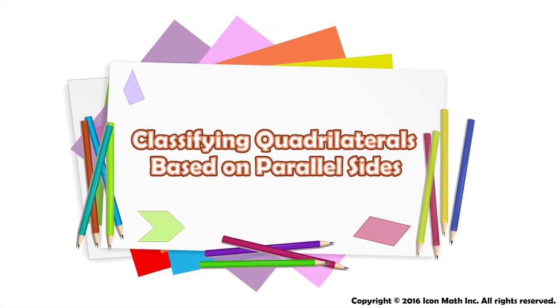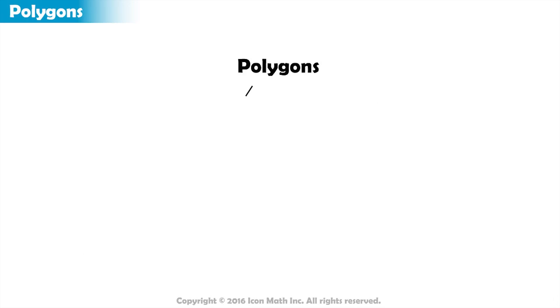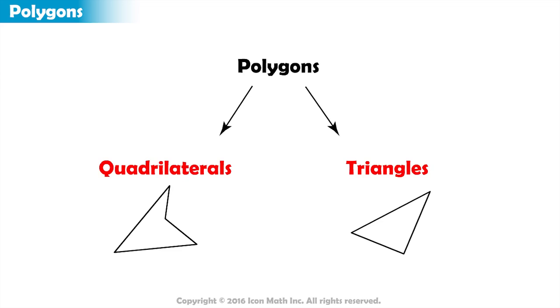Classifying Quadrilaterals Based on Parallel Sides. You learned earlier about some special types of polygons, such as quadrilaterals and triangles, and how these types or categories must satisfy all the properties of polygons.